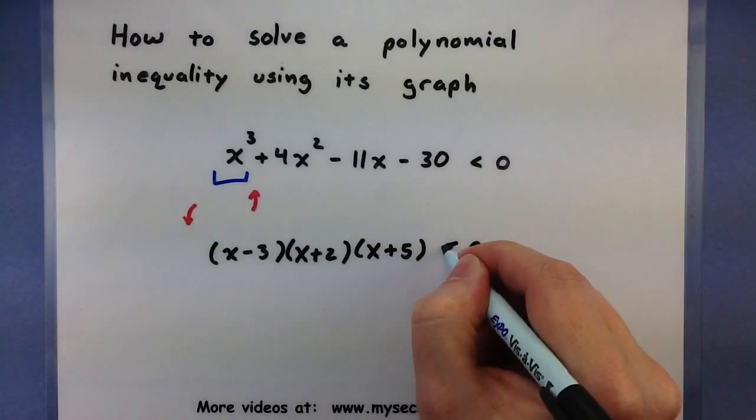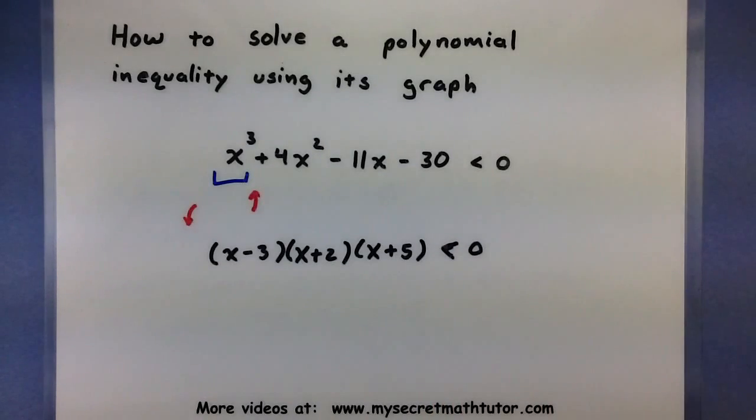So I still want to know where this polynomial is less than 0. Now be very careful, a very common mistake is to take each of these factors and set them less than 0, but that will not work out. In fact, you'll often end up with an answer that doesn't make any sense. Instead let's go ahead and graph using these factors and our end behavior, and you'll see where we can actually compare it to be less than or greater than 0.